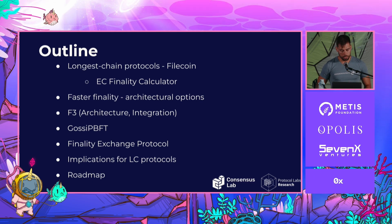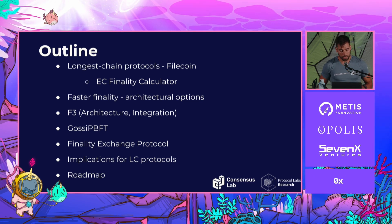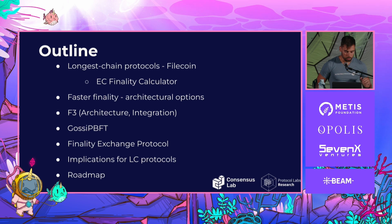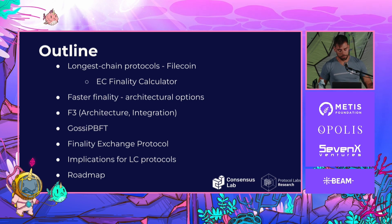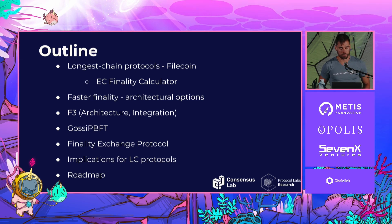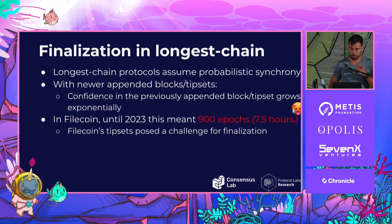We then look at architectural options to provide even faster finality, and we came up with our architecture called F3. I'll detail how we integrate it in Filecoin with the longest chain protocol. At the core of the architecture is a new consensus protocol we call GossipBFT. I'll also cover the finality exchange protocol for succinct verifiable proofs, the implications F3 brings to longest chain protocols, and the roadmap for Filecoin.